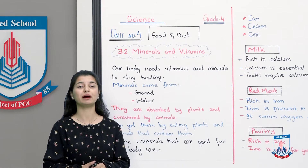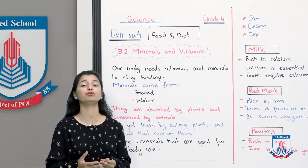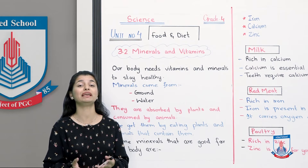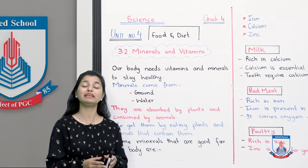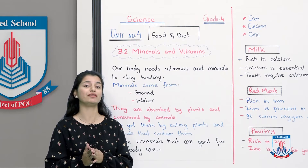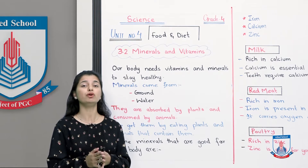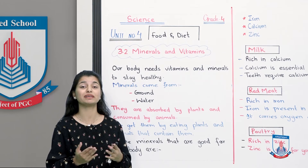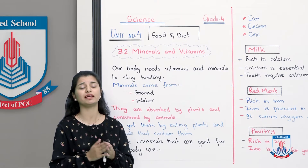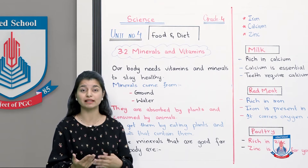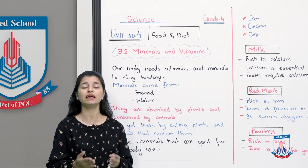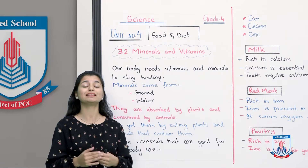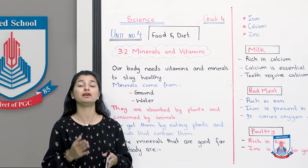So far in this chapter, we have talked about why food and diet are important and what are the benefits of it. In detail, we have talked about proteins and carbohydrates. We studied about different minerals and different things that our body needs — proteins, carbohydrates, minerals, oils, fats. We have given a brief description in the first two lectures. Now let's talk about intricate details and minerals.